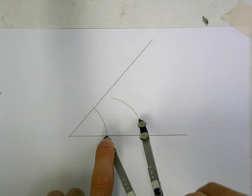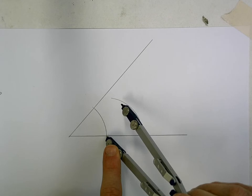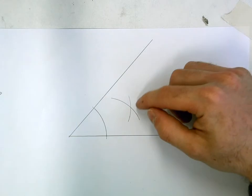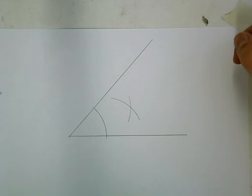Take the compass, put it on the opposite point, and strike an arc. Those two arcs will cross over each other.